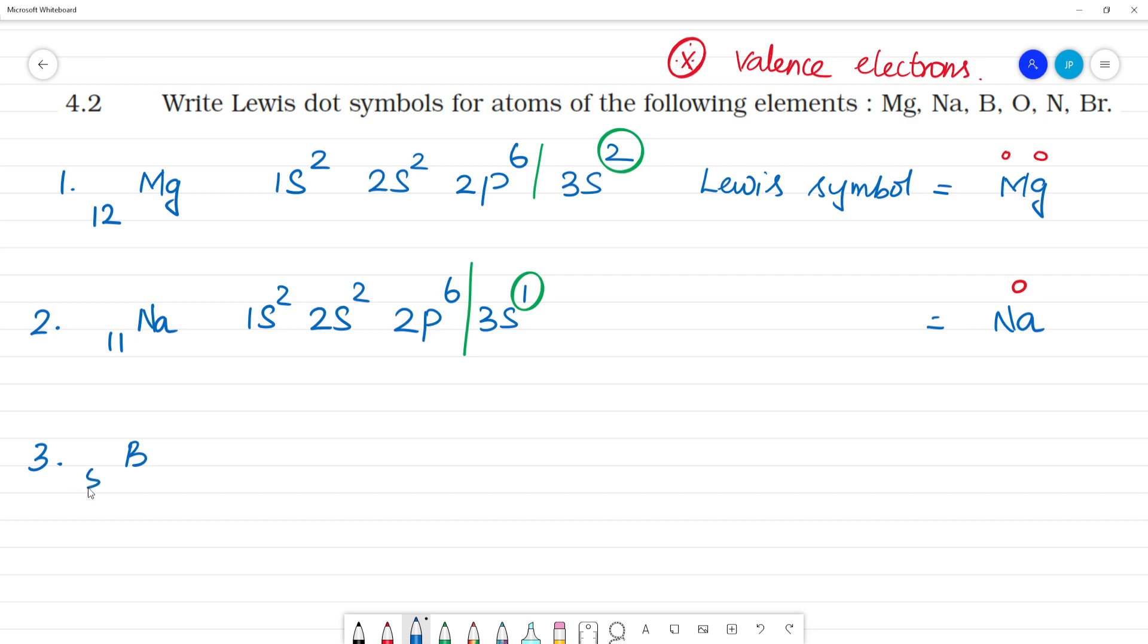Boron, the atomic number is 5. The electronic configuration: 1s², 2s², 2p¹. Then total 2 plus 2 is 4, 4 plus 1 is 5.